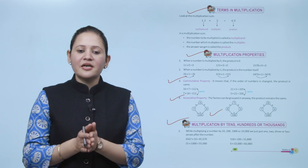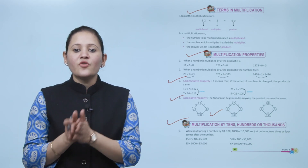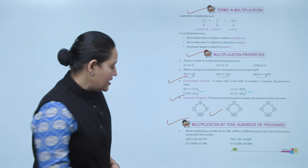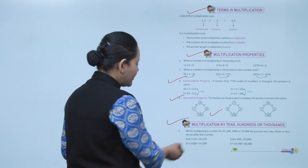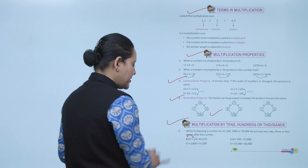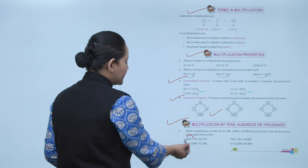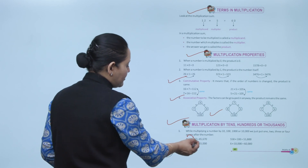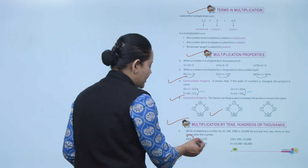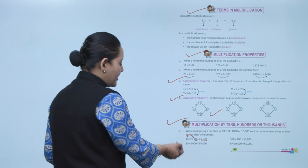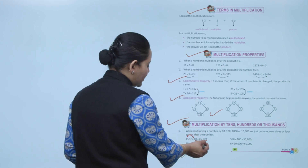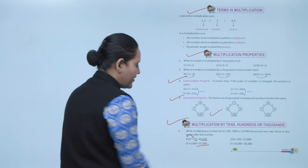Next is multiplication by tens, hundreds, and thousands. When multiplying a number by 10, 100, 1000, or 10,000, we just put one, two, three, or four zeros after the number. For example, 4567 multiplied by 10 is 45,670. And 55 multiplied by 1000 is 55,000.